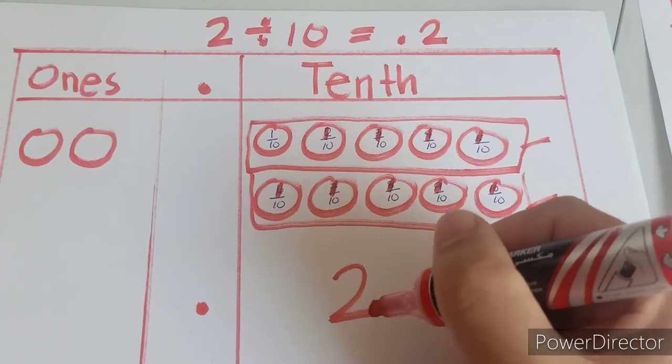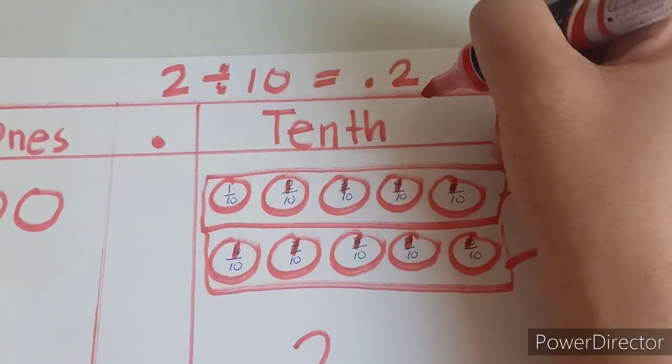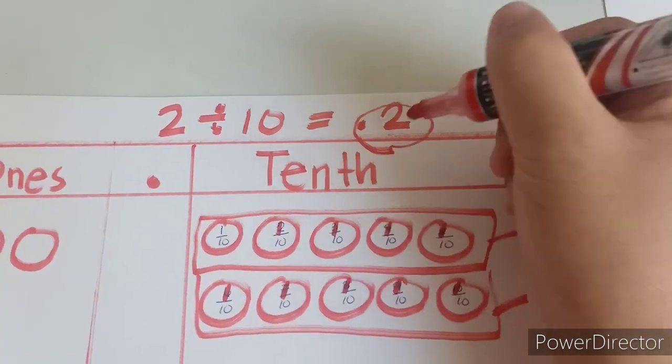Therefore, basically, 2 divided by 10 is equal to 0.2.